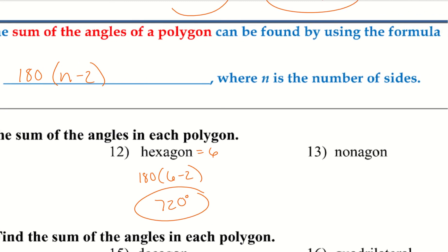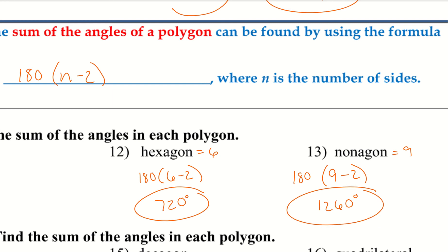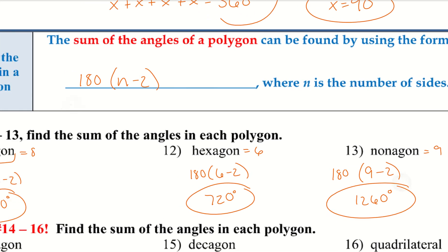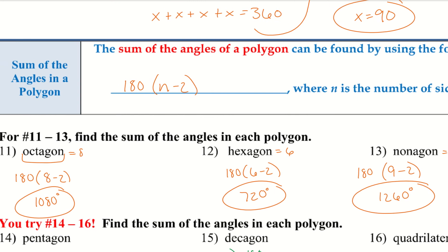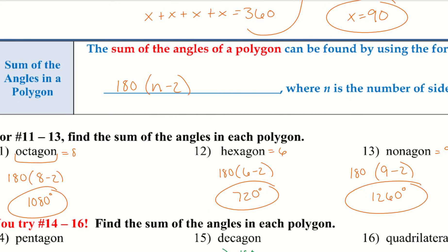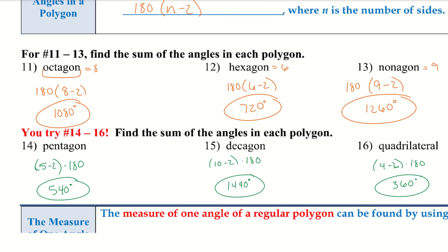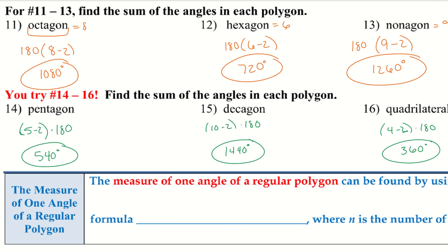For example 13, a nonagon has 9 sides: 9 minus 2, multiplied by 180, gives 1260 degrees. For these problems, you just need to know how many sides are in the polygon and plug it into your calculator. Go ahead and try 14 — pentagon, 15 — decagon, and 16 — quadrilateral. Here are those answers. I wrote 180 on the other side of my parentheses, but it's still multiplied by 180.